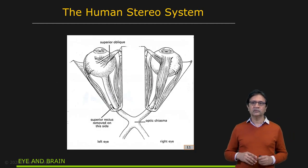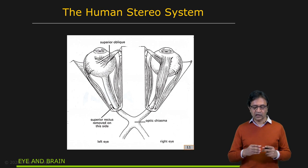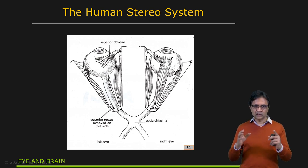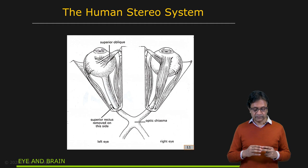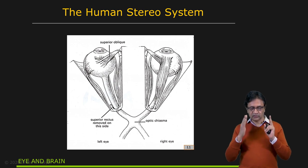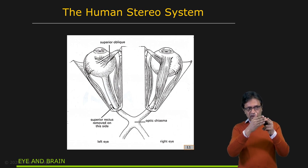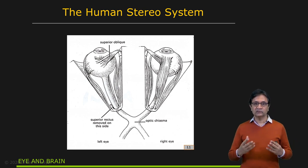If you look at the human vision system and its stereo system, it's really fascinating — a beautiful creation. You have two eyes; the interocular distance, or the distance between the two eyes for adults, is on average about 64 millimeters. When you look at something, both your eyes have to verge on that thing — their optical axes converge at that point. That's how you project that object onto the foveas of the two eyes, and that's called vergence.